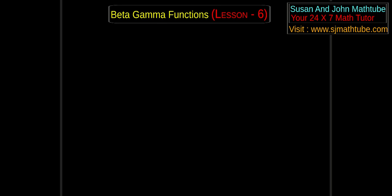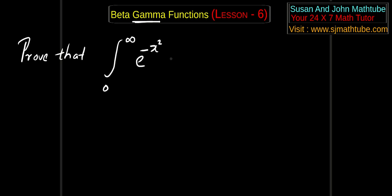Today we are going to deal with 2 questions which look very different from the usual questions you have seen. But with the help of the definition of the gamma function, or the gamma integral, you will be able to tackle them very easily. If you get a function in real life which resembles e to the power minus x square, then there is only one thing that can help you in integration — our Beta Gamma Functions.